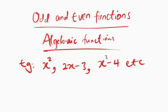Here are examples of algebraic functions. We have x squared, 2x minus 3, x to the power of 3 minus 4, and so on. All of these functions are said to be algebraic functions. So how can we identify whether an algebraic function is even or odd? We have three methods: the first is by considering the exponents of the unknown variables, the second is by substituting x with negative x, and the last method is by graphing.